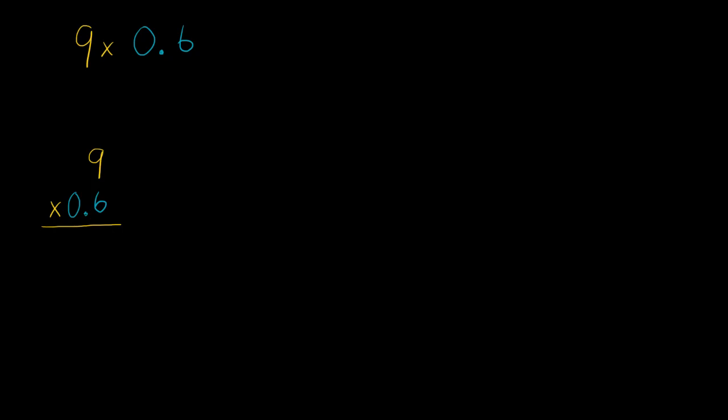I'll give you a hint. 0.6 is the same thing as 6 divided by 10. We know that if we start with 6, which we could write as 6.0, and if you divide it by 10, dividing by 10 is equivalent to moving the decimal place one place to the left. So 6 divided by 10 is 0.6.